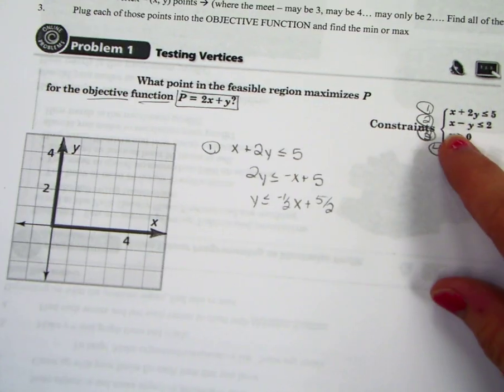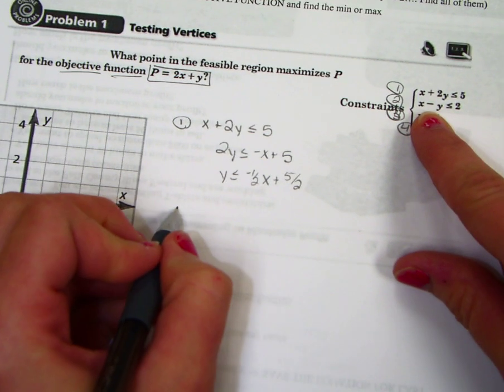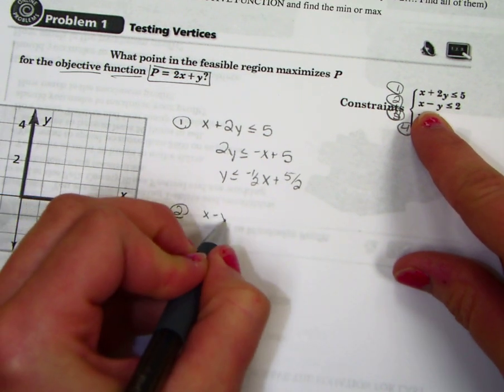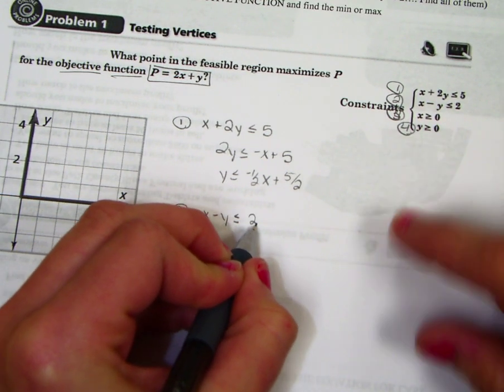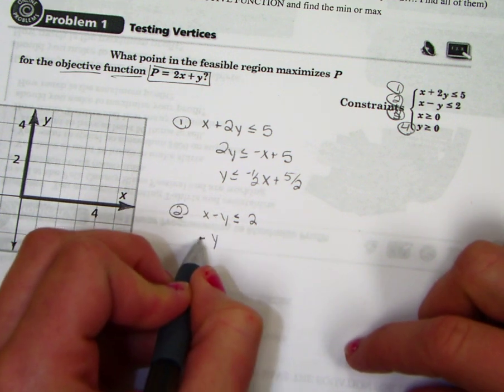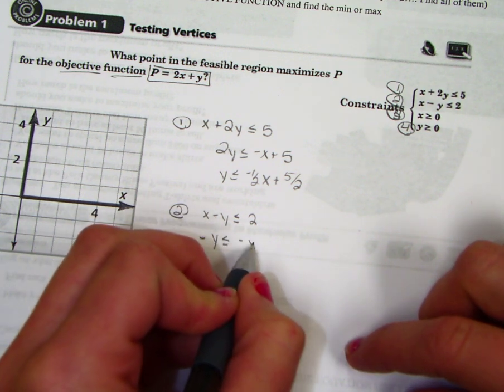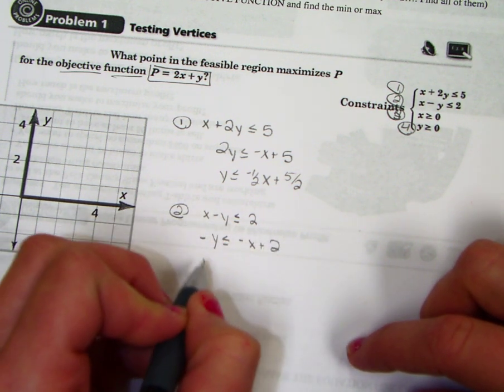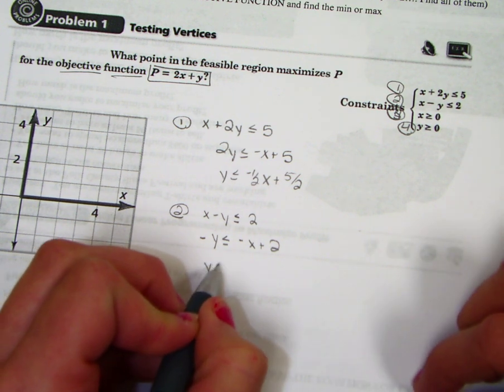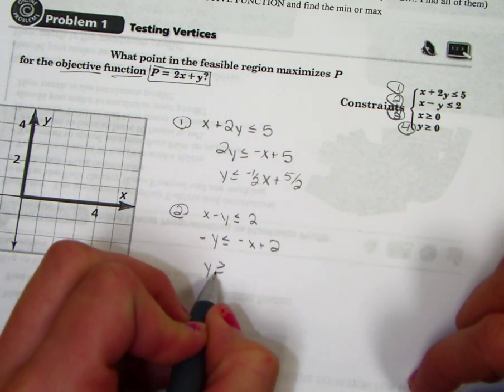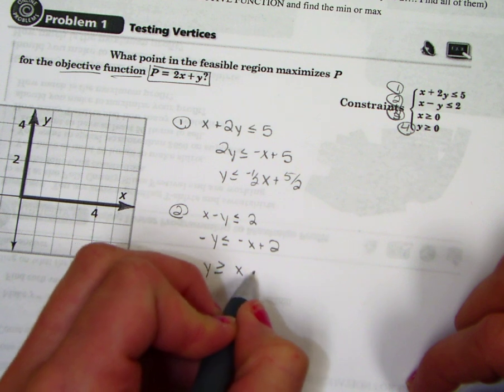The next constraint we're going to graph is number 2. x minus y is less than or equal to 2. We'll take the x over. So we have negative y is less than or equal to negative x plus 2. And then we're going to switch the negatives out. So we're going to get y is greater than, remember to flip your sign, positive x minus 2.